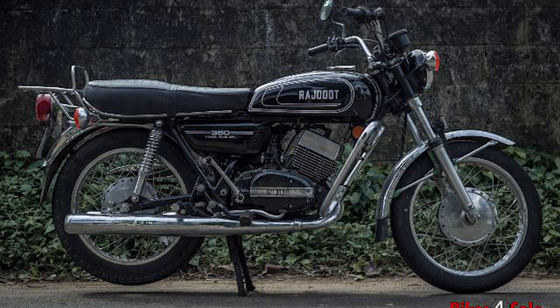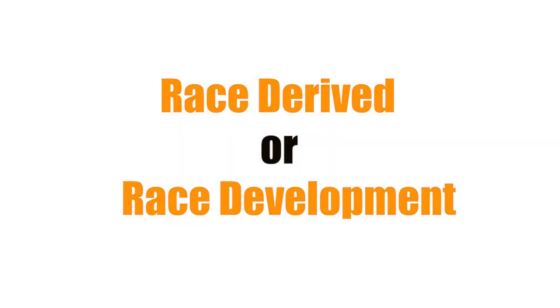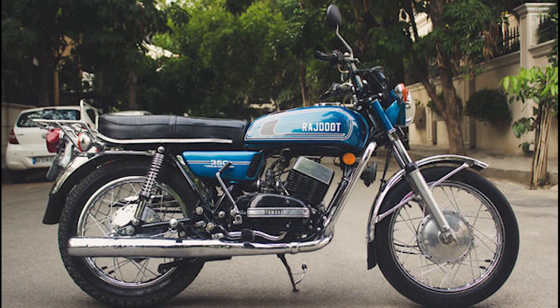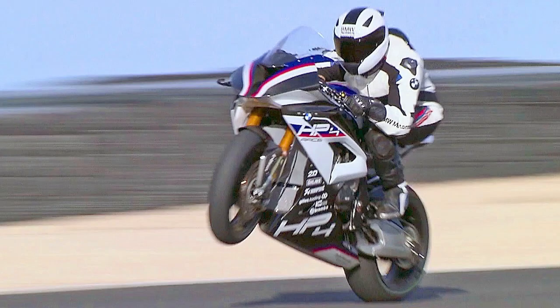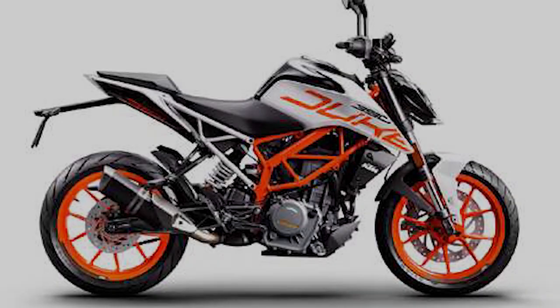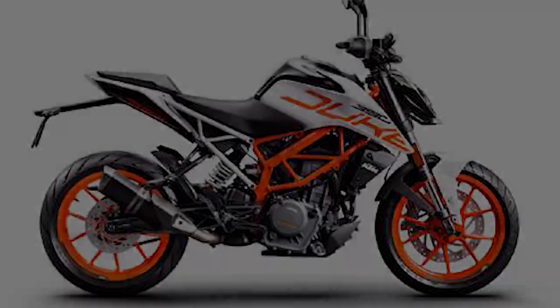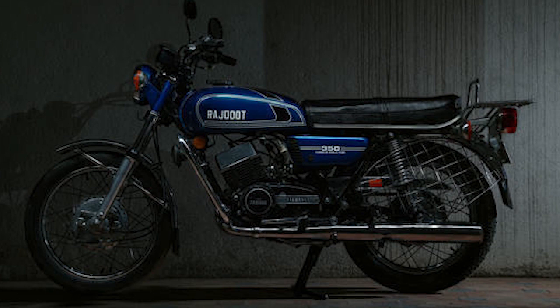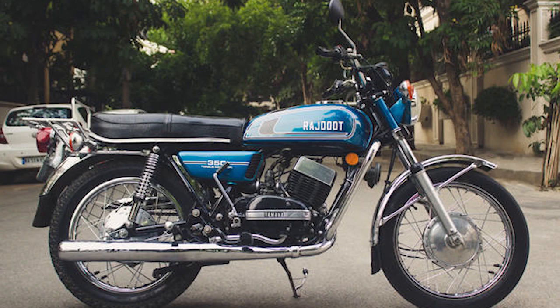There is a name called RD. If you want to talk about RD, it stands for Race Derived or Race Development. If you want to talk about basic bikes, you can use it in races. Now, KTM Duke and RC — if you want to compare with RD, you can talk about top speed and performance. The RD is a powerful vehicle.